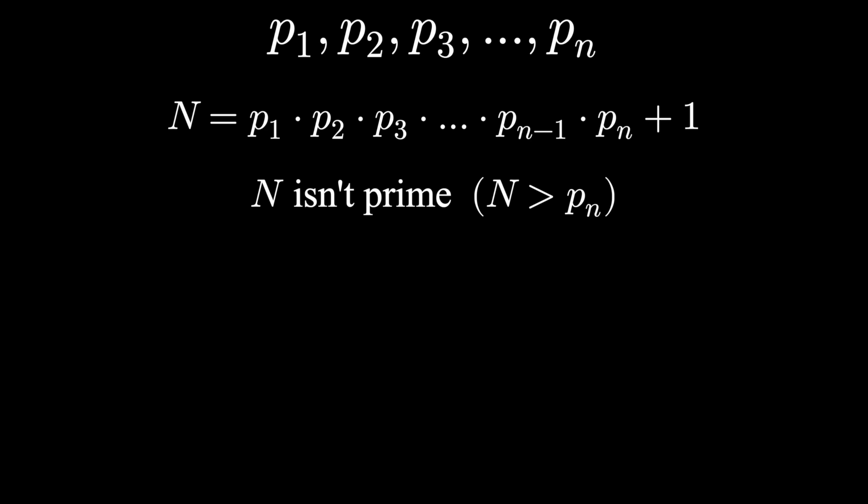Well, every composite number has a prime factorization. That is, every composite number can be written as a factor of primes. For example, 30, a composite number, can be written as 2 times 3 times 5, all of which are prime. So this capital N, which is composite, must have a prime factorization. In particular, one of the primes on our list must divide n.